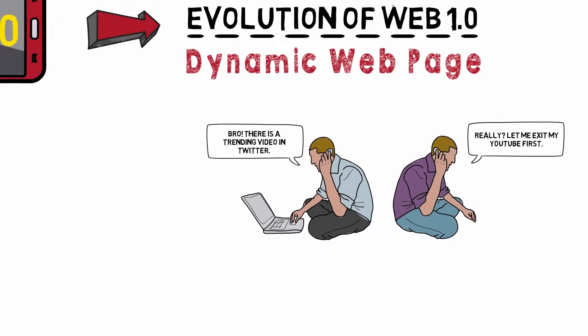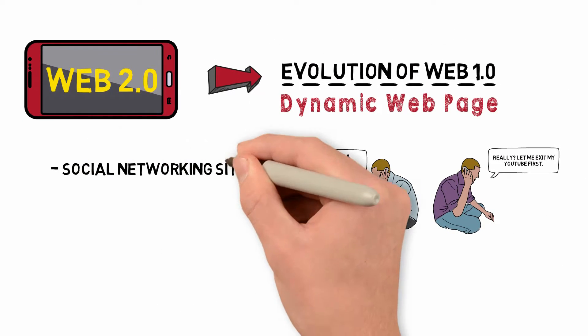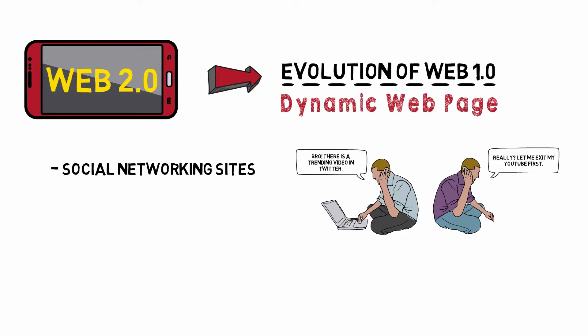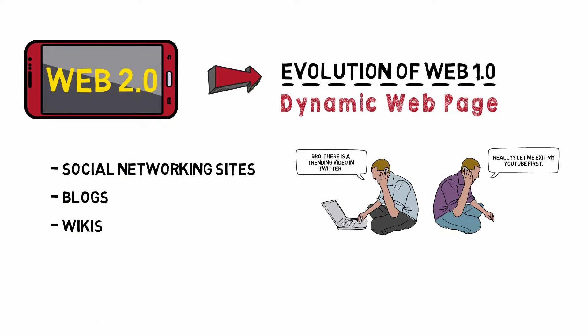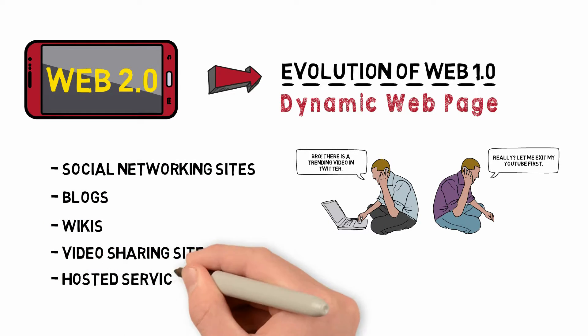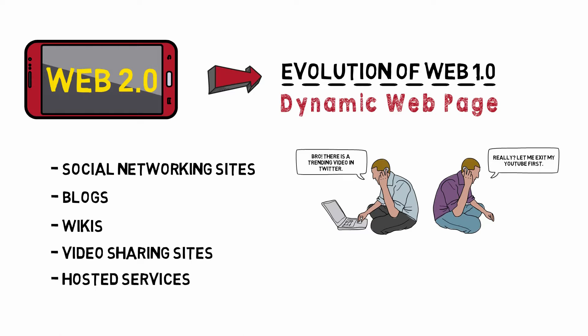Examples of Web 2.0 include social networking sites, blogs, wikis, video sharing sites, hosted services, and web applications.